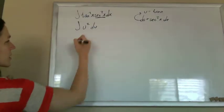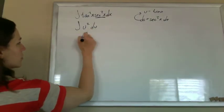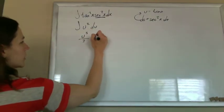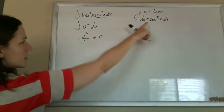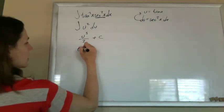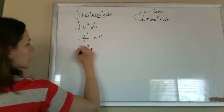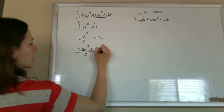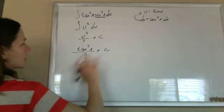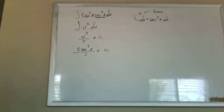This is much simpler to integrate. This is u cubed over 3 plus a constant. Plug back in the tangent: tangent cubed of x over 3 plus a constant, and it's done. We're good.